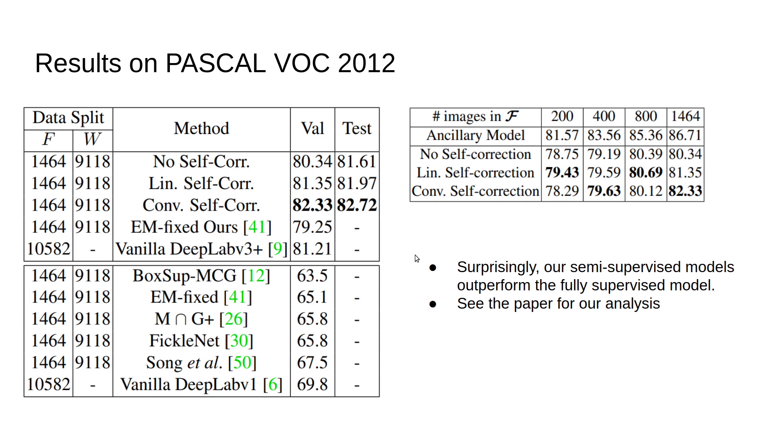These are our results on the Pascal dataset. The most important observation is: the vanilla DeepLab here is 81.2, though this isn't the exact original vanilla DeepLab—we couldn't reproduce it sadly due to batch normalization limitations on our hardware. If you notice, our approach is producing 82.3. Here is the no self-correction, here is linear, and this is convolutional self-correction. It is very counter-intuitive that a weakly or semi-supervised approach is actually higher than the fully supervised approach. We provide good reasoning and experiments to explain why this happened.